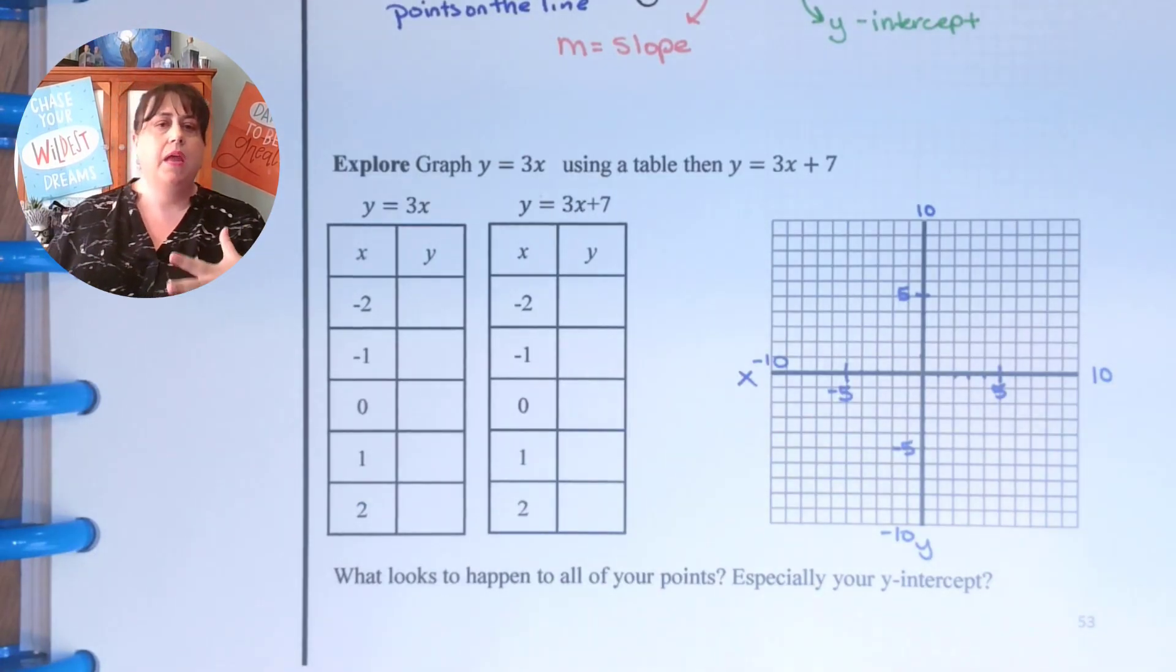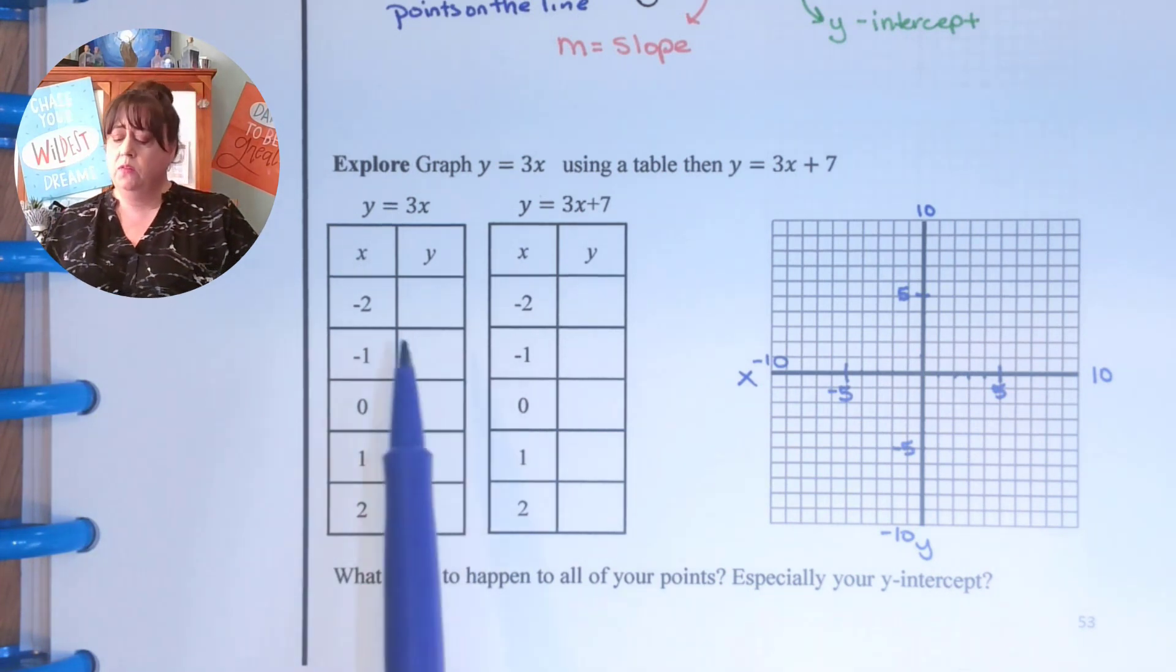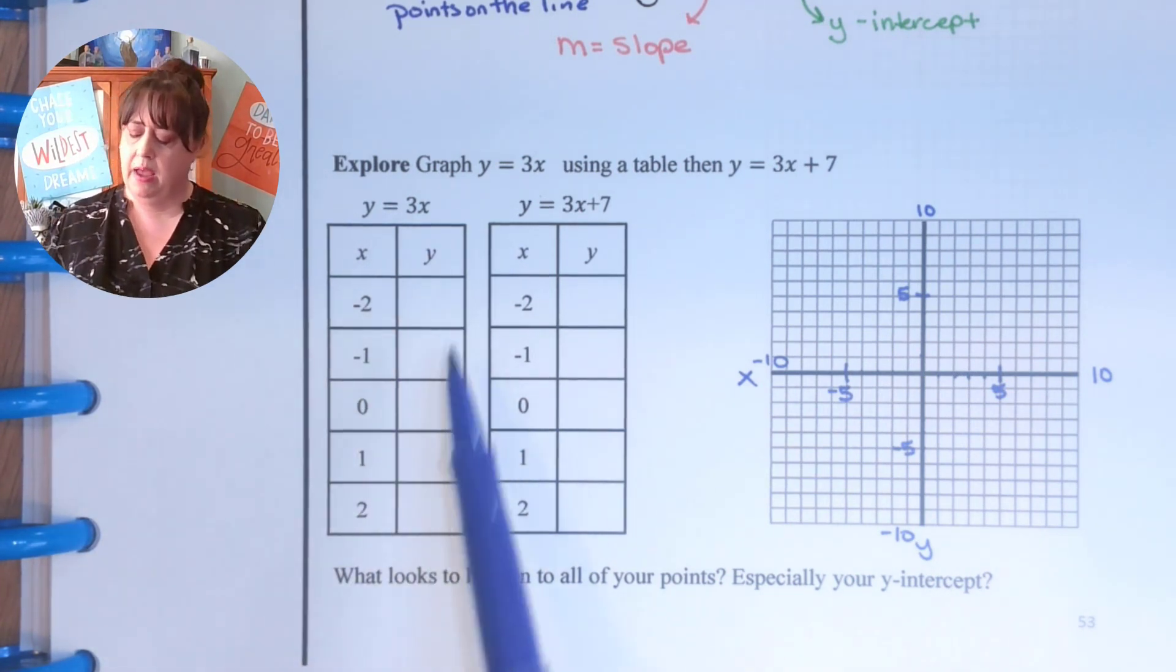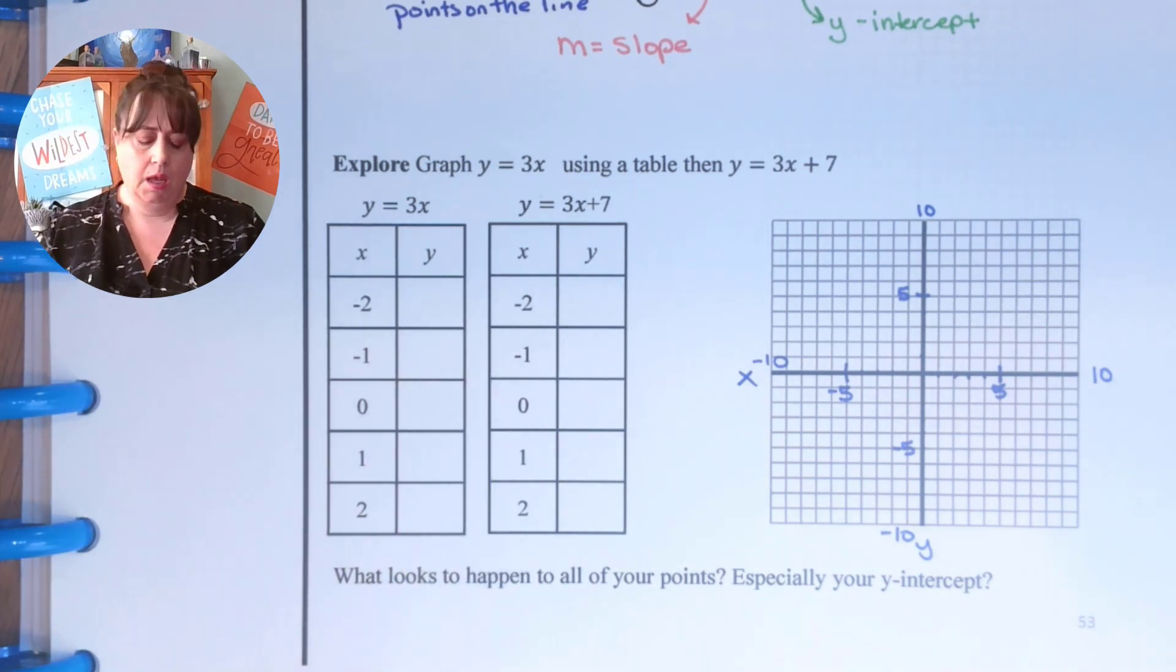So we're going to begin with something we've already done before which is graphing from a table. So when I graph y equals 3x from a table, I want to see what happens. So y equals 3x.